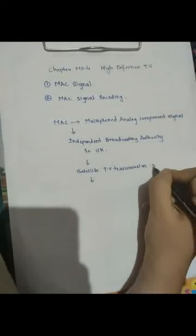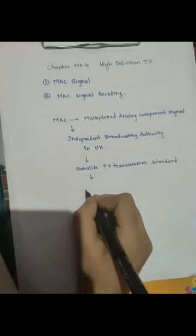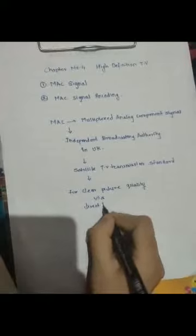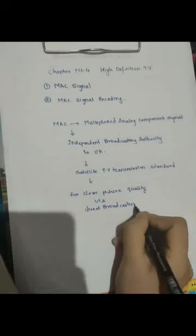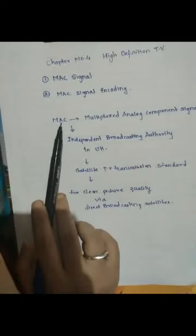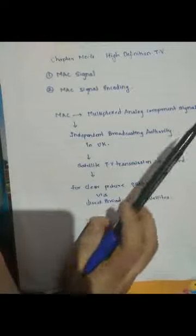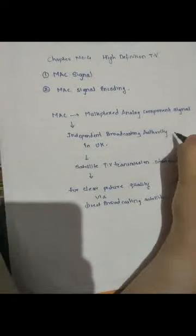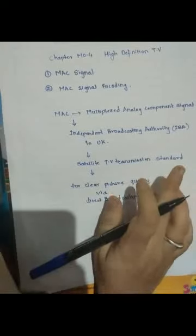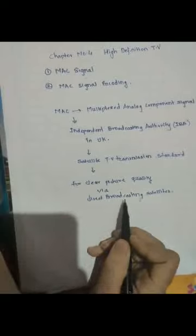The purpose behind developing this TV transmission standard was to obtain clear picture quality via direct broadcasting satellites. You can note down these points: the full form of MAC is Multiplexed Analog Component signal, it was developed in UK by the Independent Broadcasting Authority (IBA), and it is a satellite TV transmission standard developed to obtain clear picture quality via broadcasting satellites.